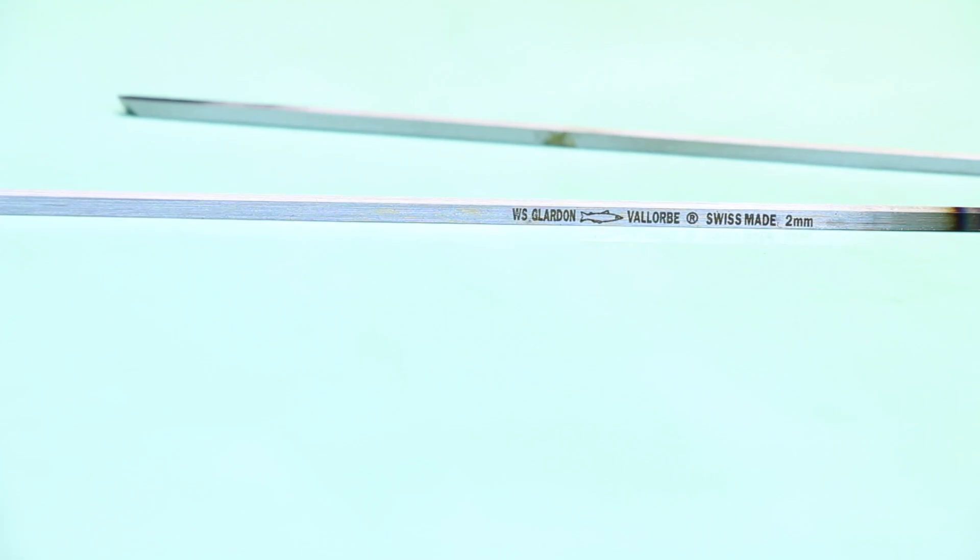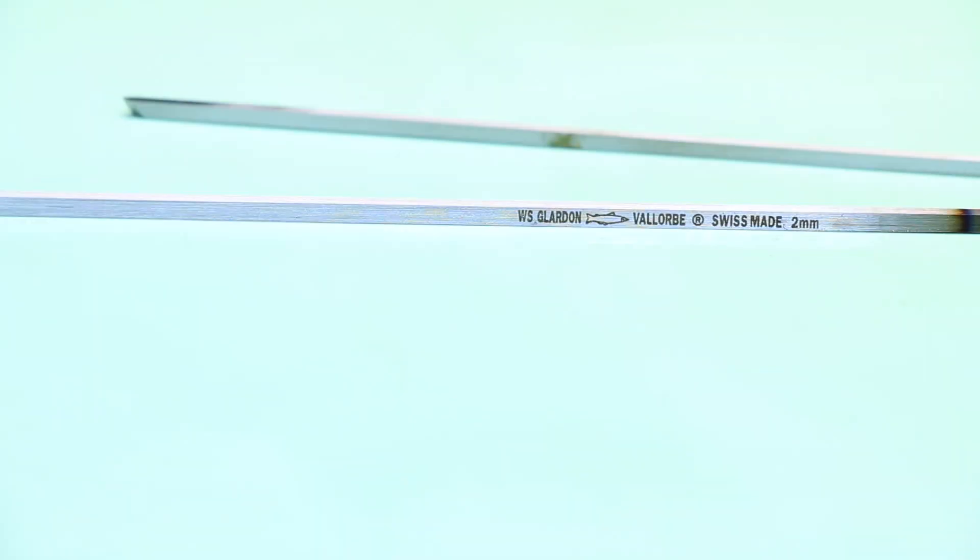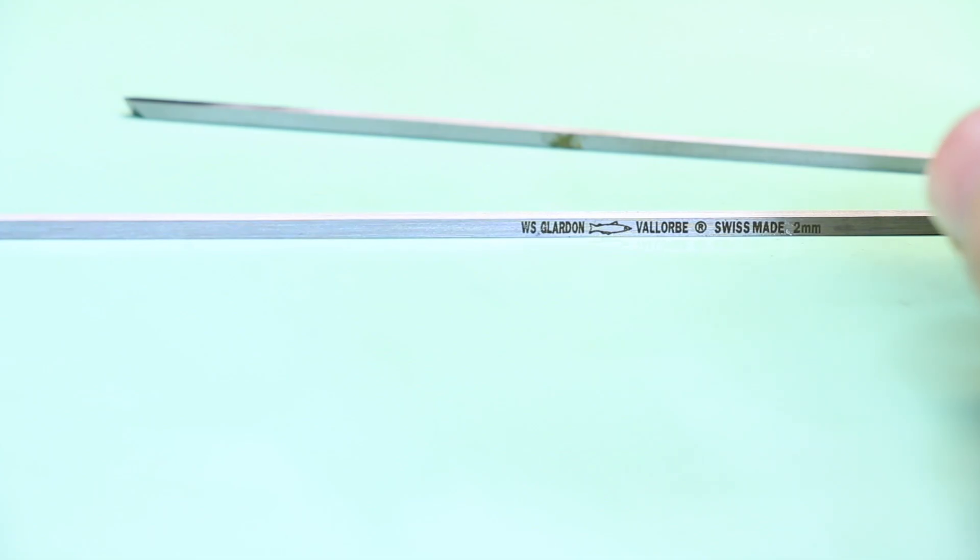My graver of choice is the Vallorbe WS 2mm graver. They come in different sizes, you can get from down to like 1.5 millimeters up to I think it's around 4 millimeters. And they also come in different shapes. So this one is a square, but there's another shape called a lozenge which is more rhombus shaped and I'll cover that in a different video. These gravers are really well made. They have extremely sharp edges, the carbon steel, the W stands for water hardening and the S stands for shock resistant. I prefer these gravers over the high-speed steel, especially because you can harden them and this helps them stay sharper when cutting say blued pivot steel or silver steel. The only downside to hardening is that they're more prone to chipping.